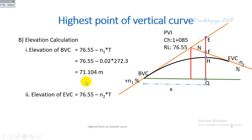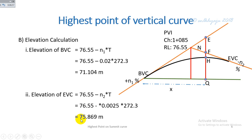The elevation of the end of the vertical curve = elevation of VPI − the vertical drop along the tangent at distance T from the VPI, calculated as 75.869 m.